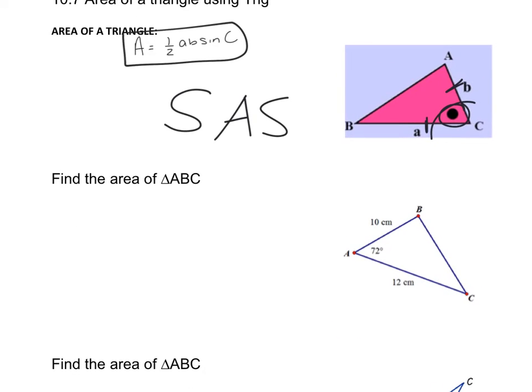We're going to apply this formula in this example where we want to find the area of triangle ABC. So the first question we have to ask ourselves is do I have two sides? I look at my image. I got a 10, I got a 12. Perfect. Do I have an angle in between them? Yep, it's a 72.